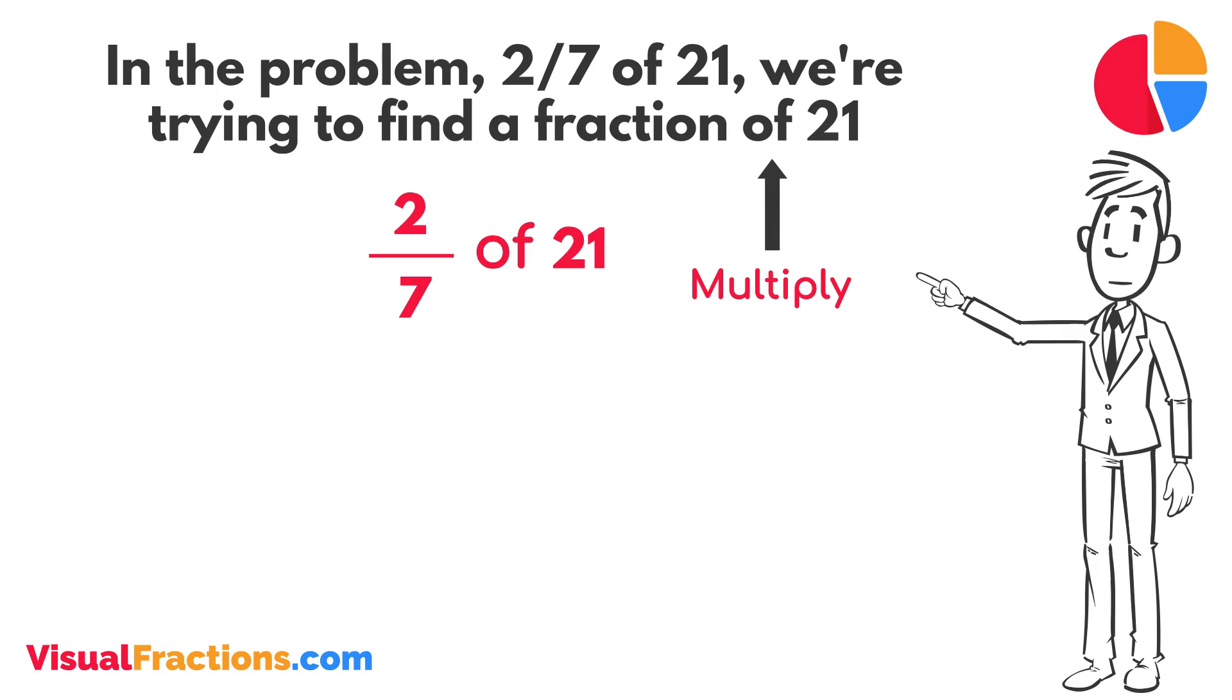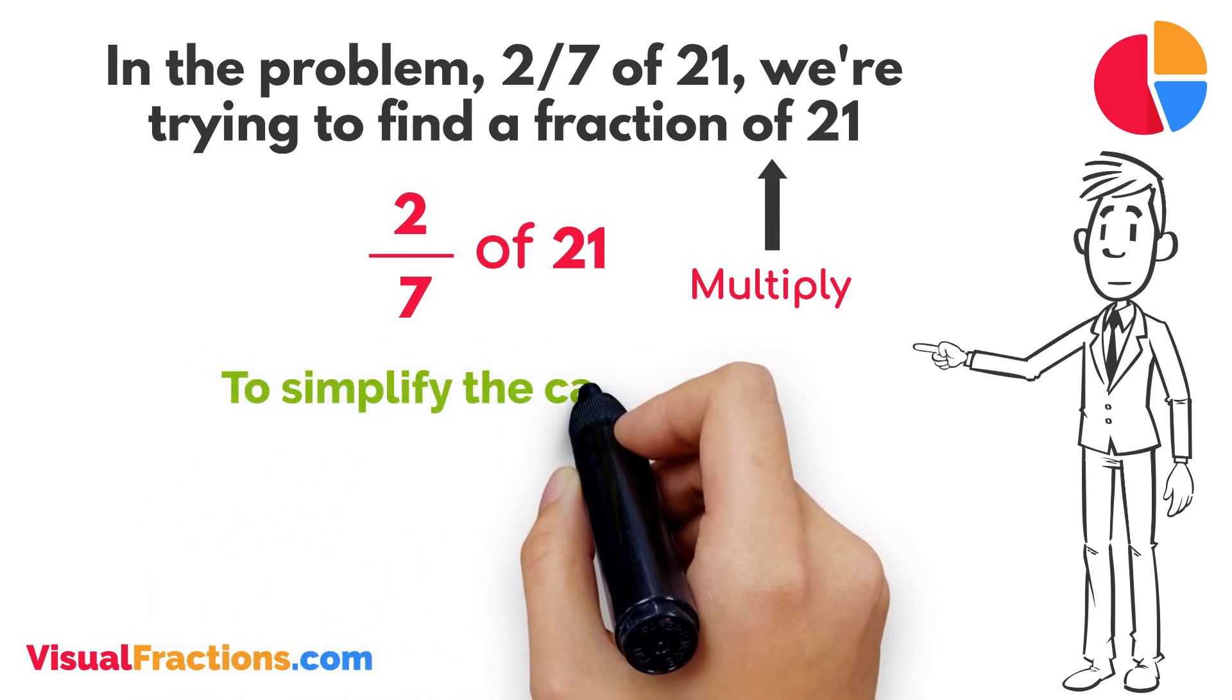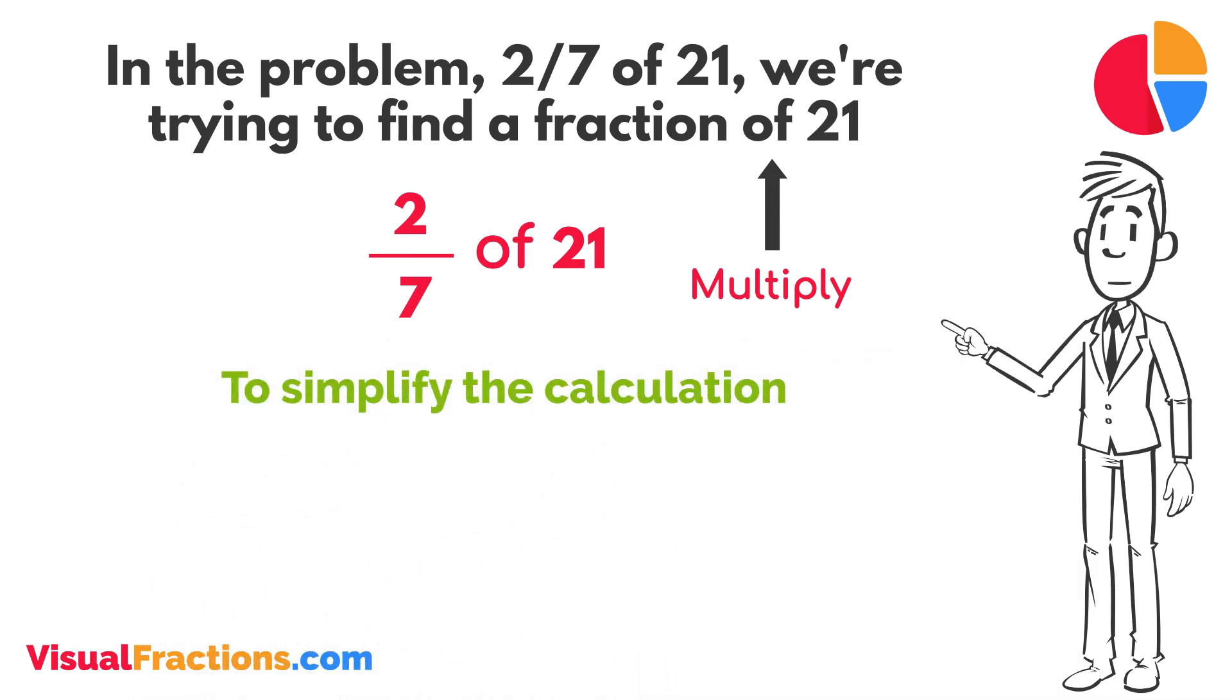2/7 times 21. To simplify the calculation, we first convert our whole number into fraction form, writing 21 as 21/1. This transformation makes it easier to work with our numbers as fractions.